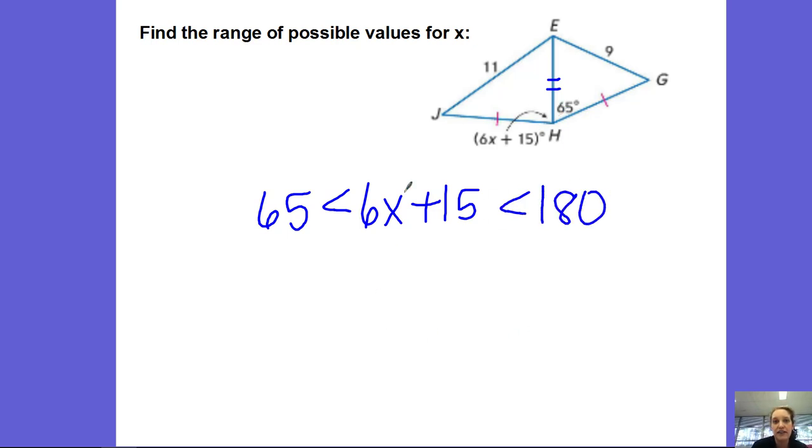And so I want to find a range of possibilities for x, so I'm essentially going to solve this for x. First I'm going to subtract 15 from all three. So it cancels out here and I'm left with 6x. 65 minus 15 is 50, and 180 minus 15 is 165.